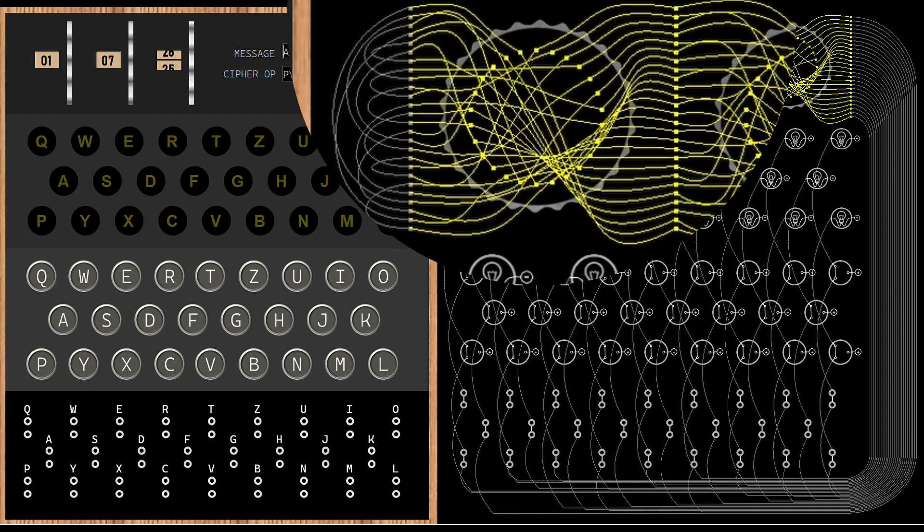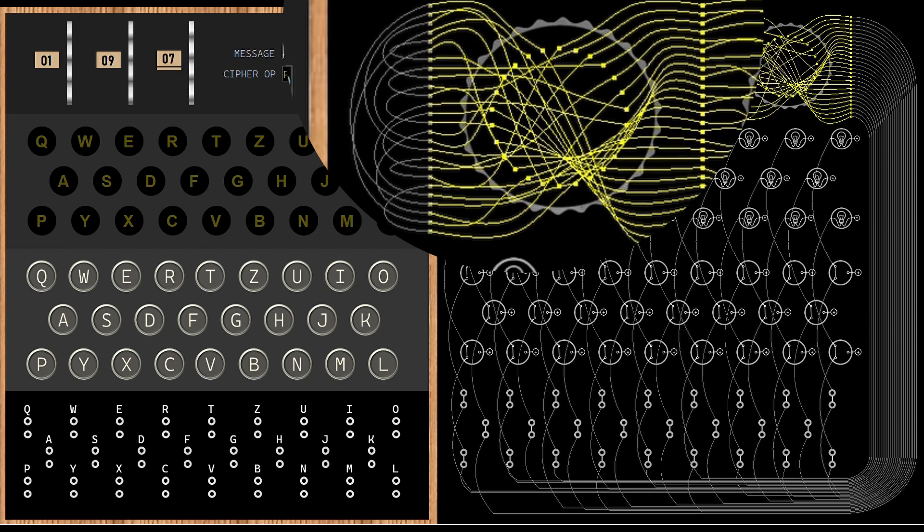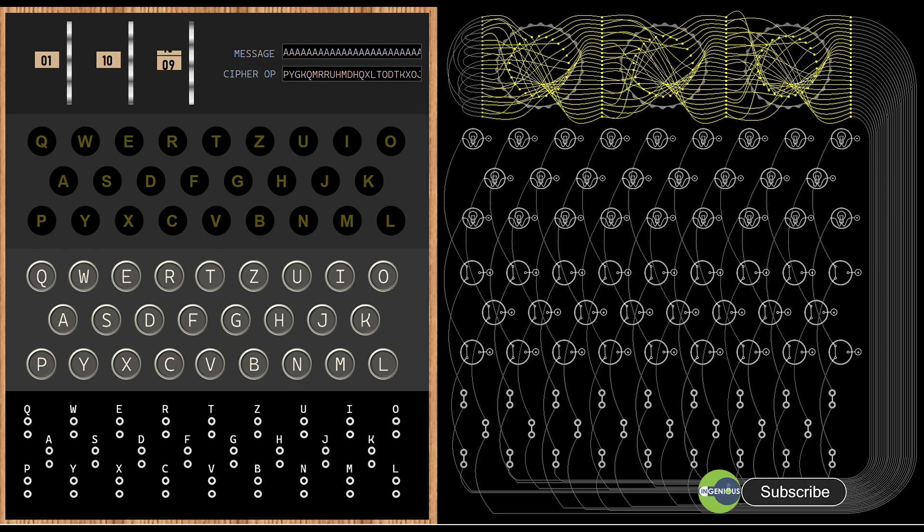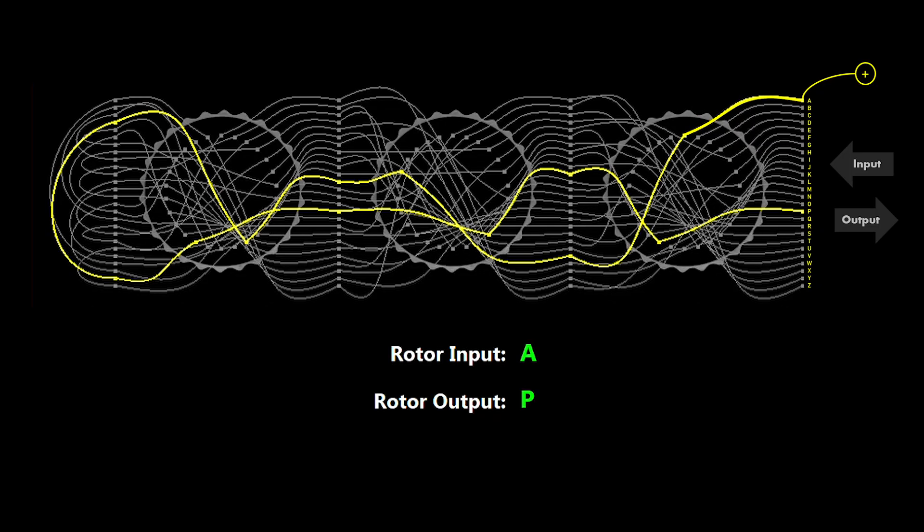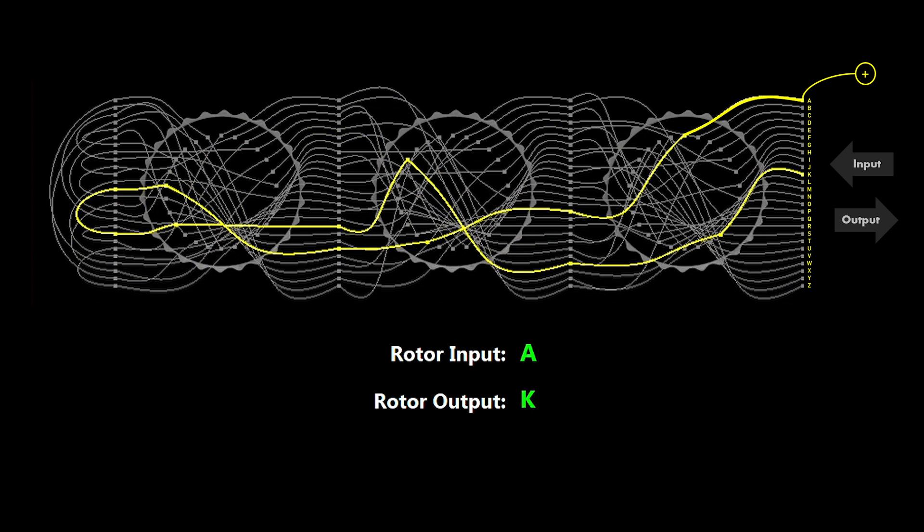Output of the third rotor, that is the leftmost rotor, is fed back into itself which is called as the reflector wiring. It is worth noticing that the rotors use the same 26 wires for inputs as well as outputs. In this example I'm giving input voltage to the first wire, that is to the letter A. The voltage travels through all the rotors and back to generate the output. As you can observe, the output letter keeps changing as the rotors rotate.